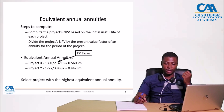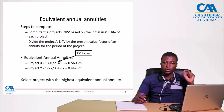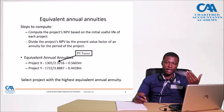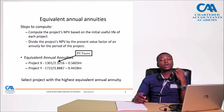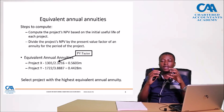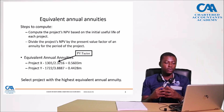So how else can we address this problem? We can use what is called the Equivalent Annual Annuity. How do we calculate an Equivalent Annual Annuity? The first thing we need to do is calculate a project's NPV based on its initial useful life. So for Project X, which is 3 years, we calculate Project X's NPV over the 3-year period. Then we also calculate Project Y's NPV over the 6-year period. Once we have the NPV, the next step is to divide the project NPV by the present value factor of an annuity for the period of the project.